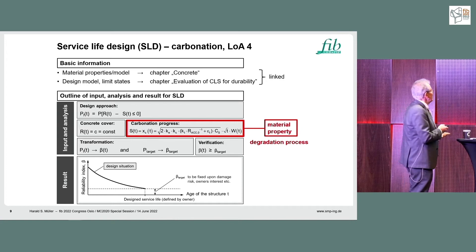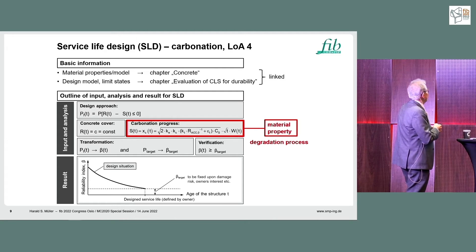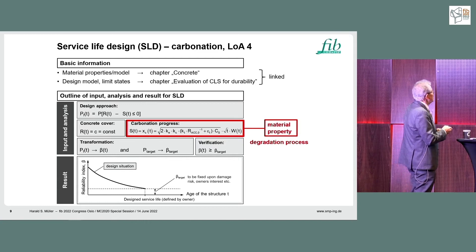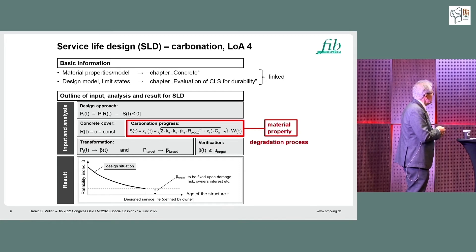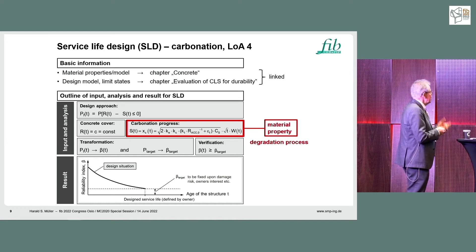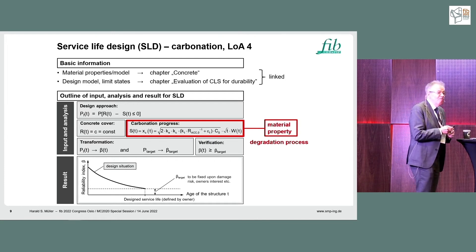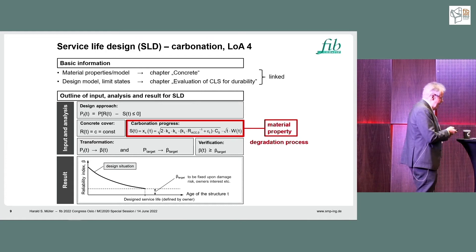If you combine these things for service life design and durability, you need the basic information — material properties and material models — found in the chapter on concrete. You also need the design models and limit states given in the chapter on evaluation of SLS for durability. Both chapters are well linked in terms of durability information. The classical analysis shows input, analysis, and result: the design approach, mathematical and probabilistic equations, the material property — for example the carbonation process — and the result is a reliability index decreasing over time. You can introduce the designed service life into this equation. This is the whole process for a Level of Approximation 4 approach.